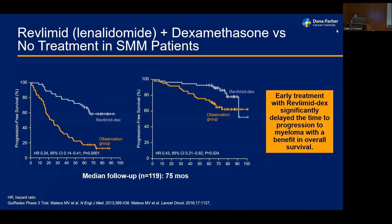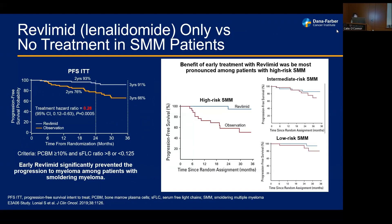One of the first early intervention studies came out of Spain — a phase three randomized trial comparing Revlimid (lenalidomide) and dexamethasone versus observation in high-risk smoldering myeloma patients, started in 2007. It showed that early Revlimid use improved the time to onset of myeloma as well as overall survival compared to observation. A similar ECOG study in the United States showed an improvement in progression-free survival — delaying onset of active myeloma in those treated with Revlimid versus observation.